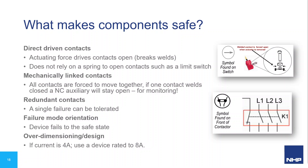Mechanically linked contacts are used in electromechanical switching devices like contactors and relays — all contacts, both main poles and auxiliaries, are solidly linked together. If any one contact is stuck in the incorrect state, all others must also be in the same state. We can use an auxiliary contact to provide reliable feedback to the safety control system. Some safety components also have multiple redundant contacts linked in parallel or series so that if one fails, the other can still perform the safety task.